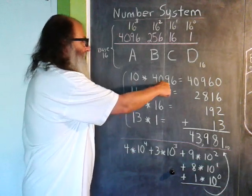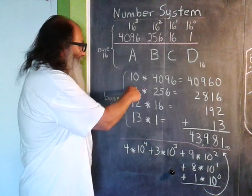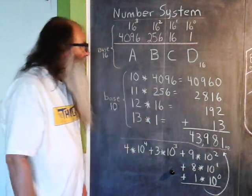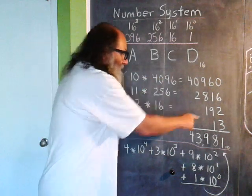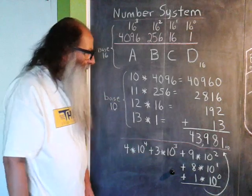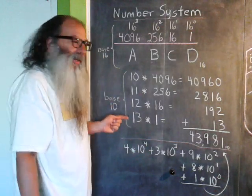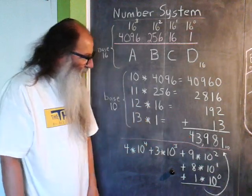Again, 10 times 4096 gives us that number. B, or 11 units of 256 gives us that. C, or 12 units of 16 gives us 192, and then we have 13 ones. And if we go ahead and do this base 10 arithmetic, we end up with the number 43,981.